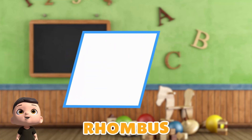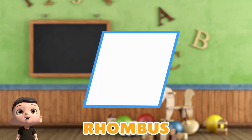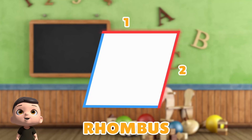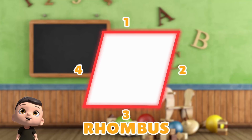This is a rhombus. Let's see how many sides a rhombus has. 1, 2, 3, 4. Rhombus has 4 sides.